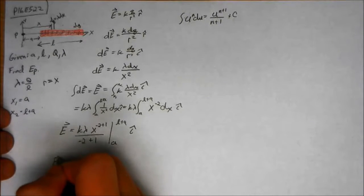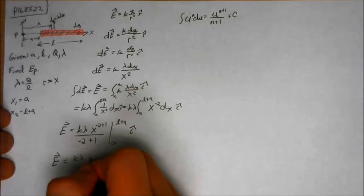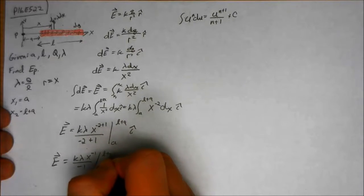So the electric field, then, is equal to K lambda negative 2 plus 1, x to the negative 1, 1 over negative 1, A L plus A.